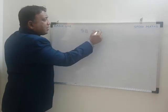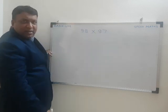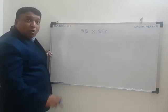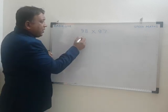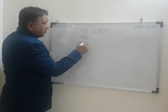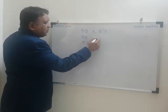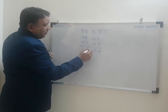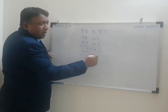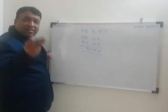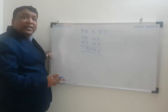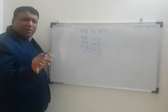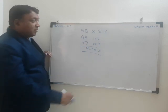Suppose I take the number 98 and multiply it with 97. I will show you how to multiply in 3 seconds. My number is 98 and 97 — the answer is 9, 5, 0, 6, which is 9506. It took about 3 seconds. Now I will tell you how to solve using this method. It is very simple — it is Vedic Mathematics.